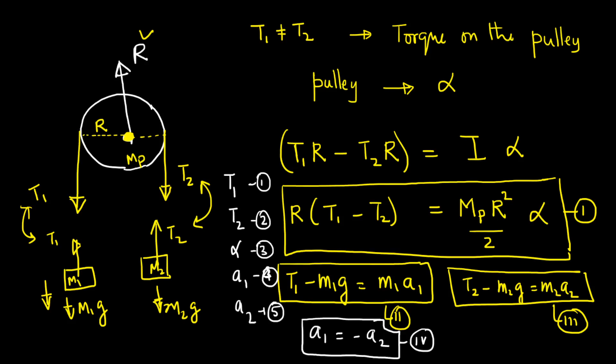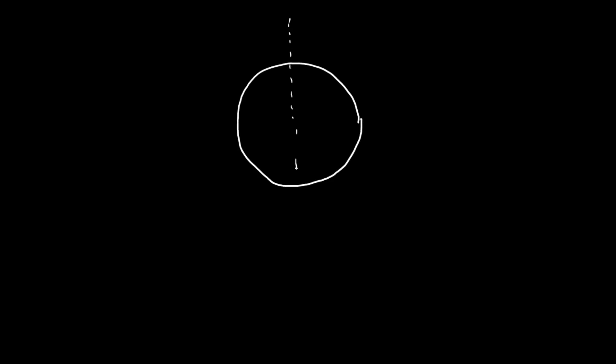The last equation is perhaps the most interesting part of the problem — the constraint equation. It's an important problem but not at all difficult. The last constraint is new and needs to be done with some care, respecting the sign convention. The origin is the pivot point of the pulley, with an x-axis and y-axis defined.